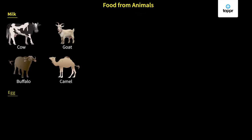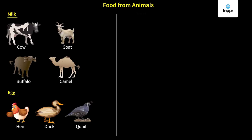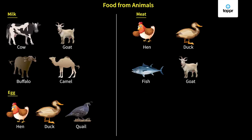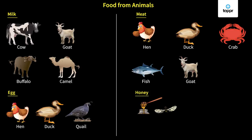The next product is eggs. Eggs are again an important food item and can be obtained from hen, duck, and quail. Next is meat, which can be obtained from hen, duck, fish, goat, and crabs. Lastly, there is honey. Honey is obtained from honey bees, which collect nectar from flowers and take it to their hive, where they convert it into the yummy honey that we eat. So that was about the foods we get from animals.